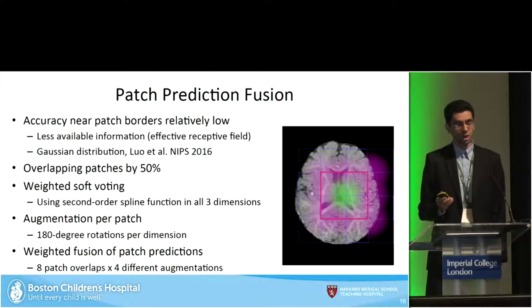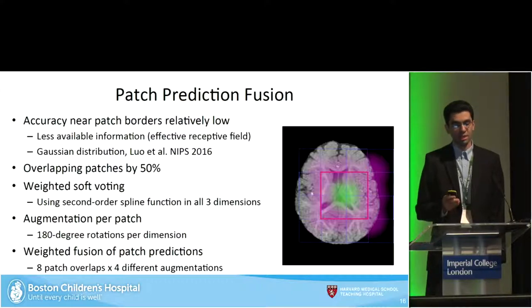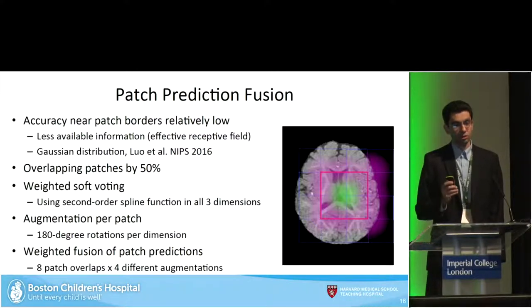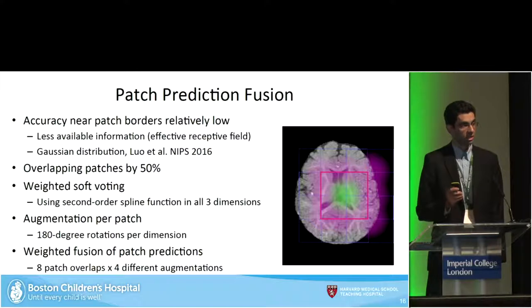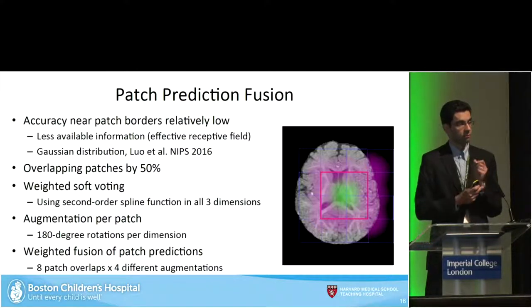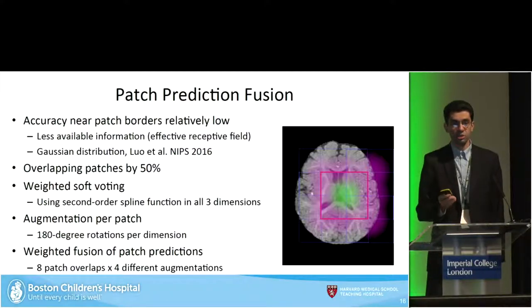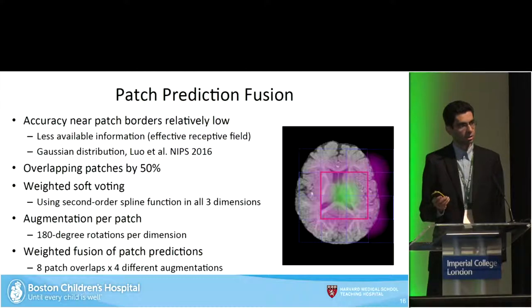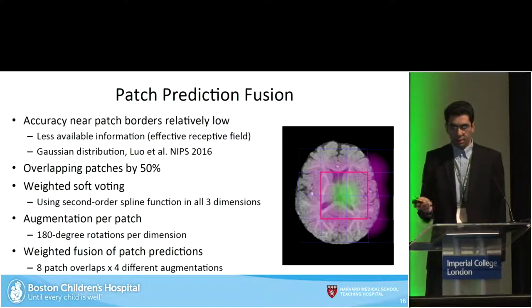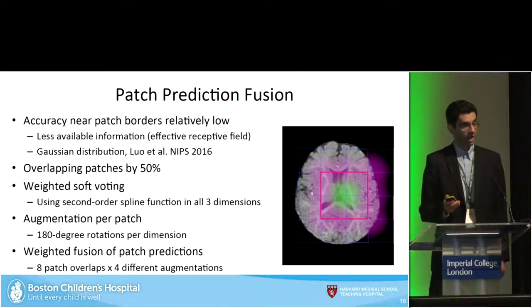Based on a paper published at NIPS in 2016, we know that at the borders of these patches, especially in image segmentation of this kind, you are using less information so the predictions are not as reliable as predictions in the middle of the image. For that reason, we take advantage of the patches and the augmentations, and fuse them using a B-spline 3D B-spline function, which basically resembles a Gaussian distribution. In total, we have 32 predictions per patch that we fuse.